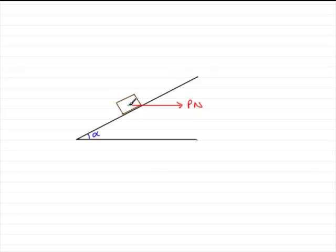Now any object is going to have a weight and the weight acts downwards. So in this case we've got the weight acting downwards, and because the mass is 1.1 kilograms, then the weight would be 1.1g newtons.